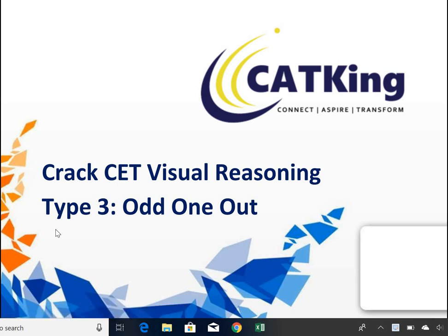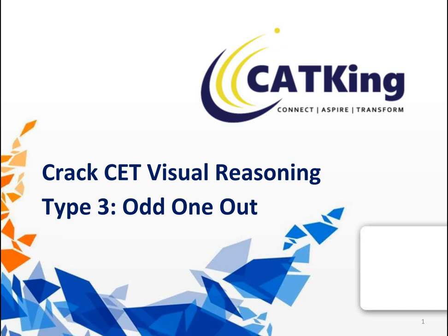All right, welcome everybody to the CAT Daily series of CATKing. Today we are going to be covering visual reasoning questions, a different type. If you remember in the previous sessions of visual reasoning, I have covered aspects of analogy as well as complete the series in terms of what would be the next image in the series. Today we are going to take care of the third type of visual reasoning questions, which is the odd one out.